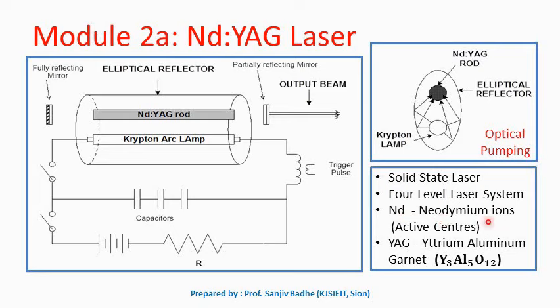Here ND stands for neodymium ions and YAG stands for yttrium aluminium garnet. This yttrium aluminium garnet is an optically isotropic crystal in which some of the yttrium ions are replaced by neodymium ions. This yttrium aluminium garnet has nothing to do with the lasing action — it just serves as a host lattice in which some of the neodymium ions can be introduced.